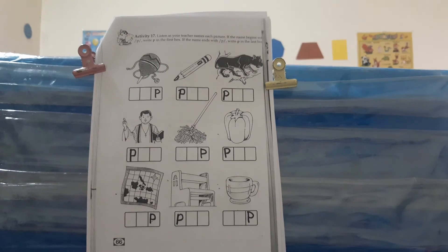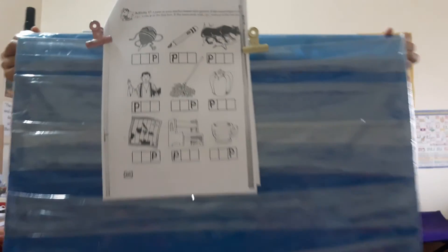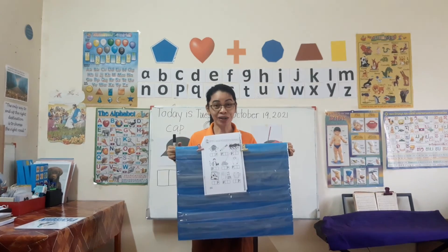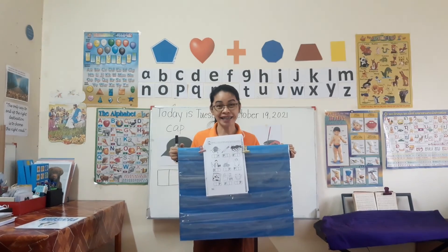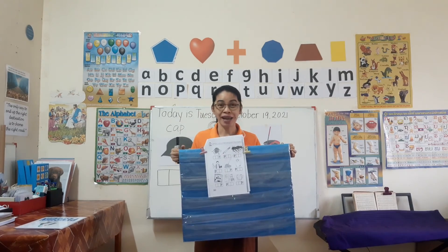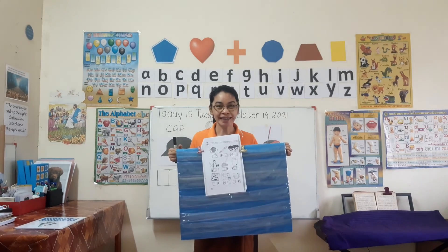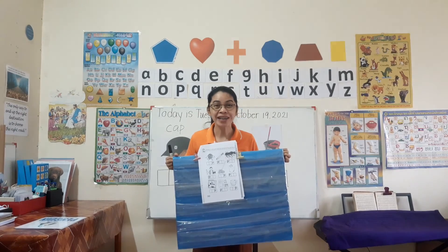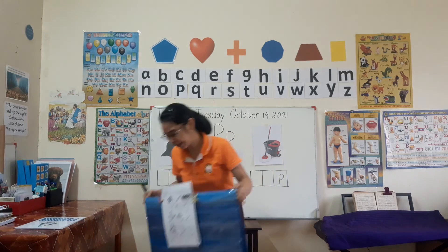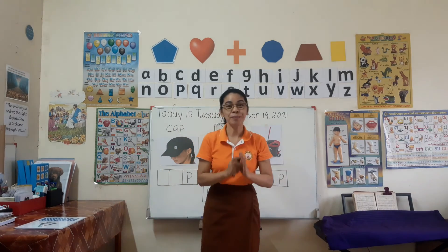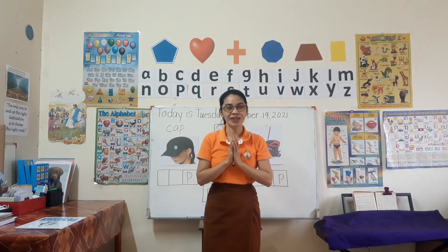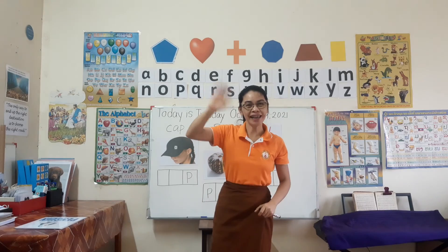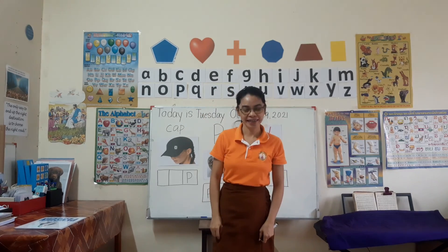Very good, children! Now let's say it all together: top, pencil, panther, priest, mop, pepper, map, pew, cup. Very good! Children, if you have any questions you can call me. I hope you remember that P sound. Say: thank you, Teacher Jonah! Thank you, Teacher Jonah! That's it for now — I'll see you tomorrow. Bye!